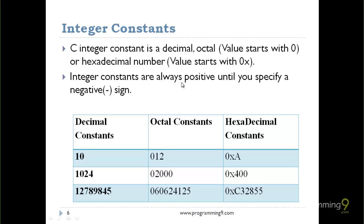Integer constants are always positive. You can also use negative values, but you need to specify a minus sign. If you don't use any positive or negative sign before the value, it will automatically be considered a positive value.